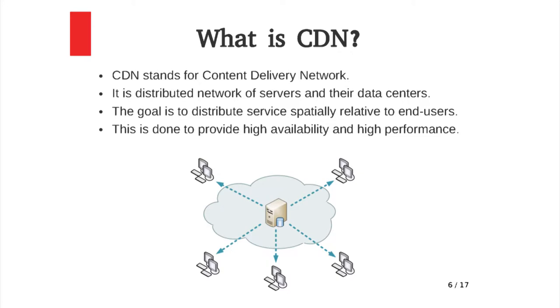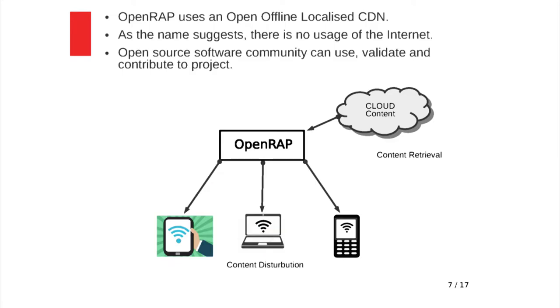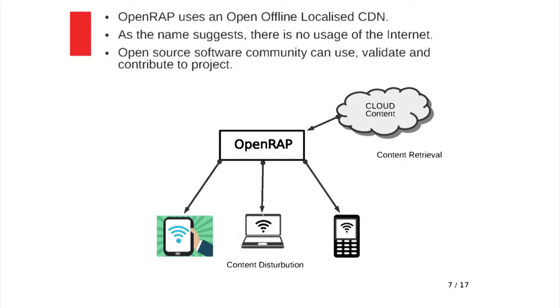To briefly go over content delivery networks in the context of OpenWrap: CDN stands for content delivery networks and is an umbrella term spanning different types of content delivery services — a distributed network of services and data centers. OpenWrap uses the concept of an open offline localized CDN. Open means open source, offline means no internet access required, and localized means localized to your educational institution. The goal of a CDN is to provide spatially relative data to end users with high availability and performance — for example, downloading an Ubuntu image from a server in India rather than one in Netherlands.